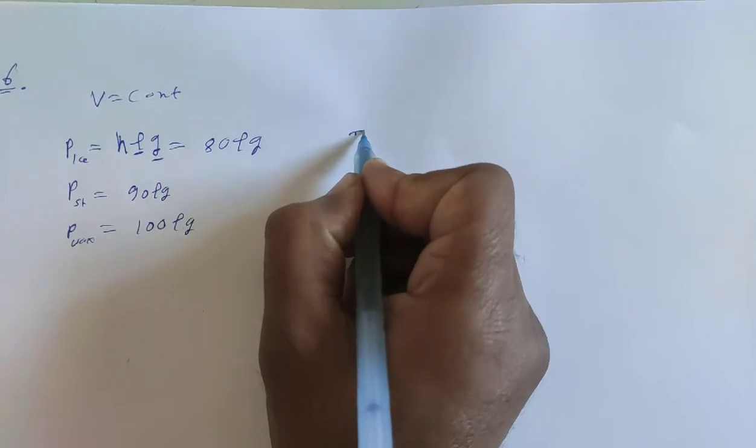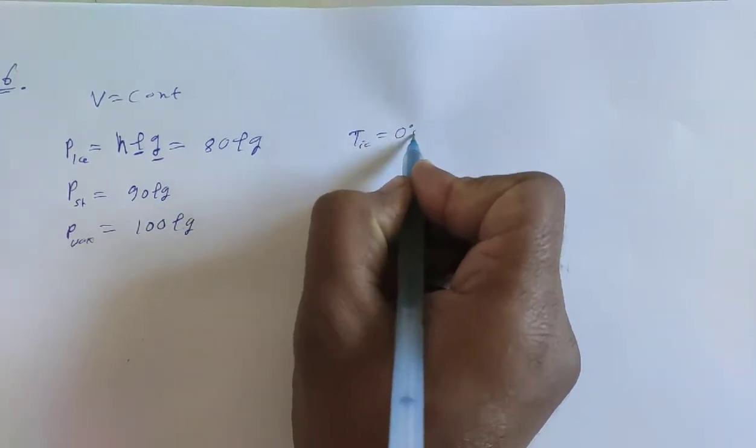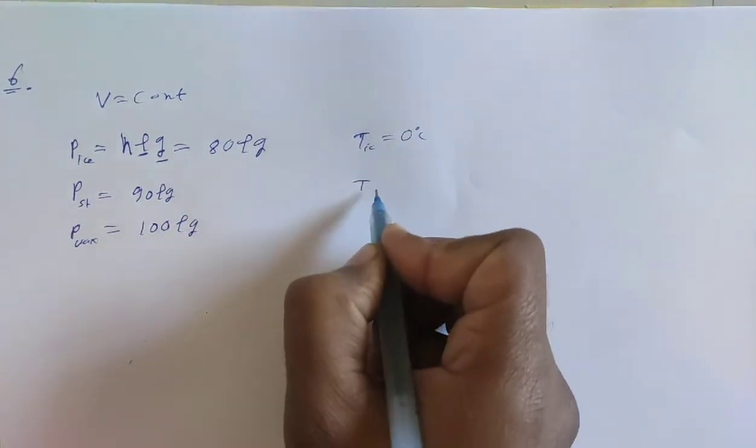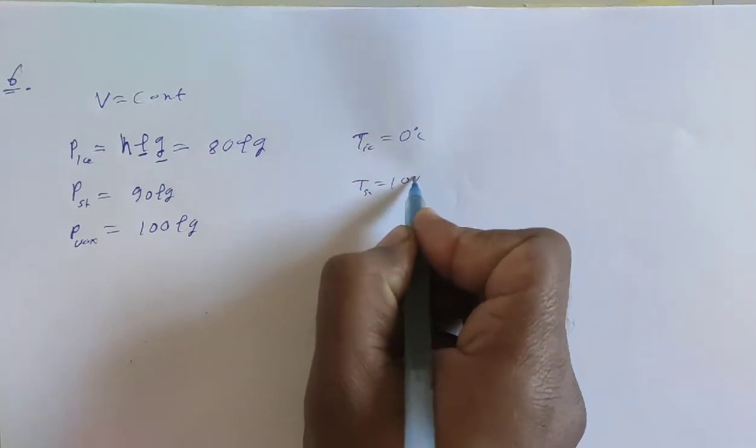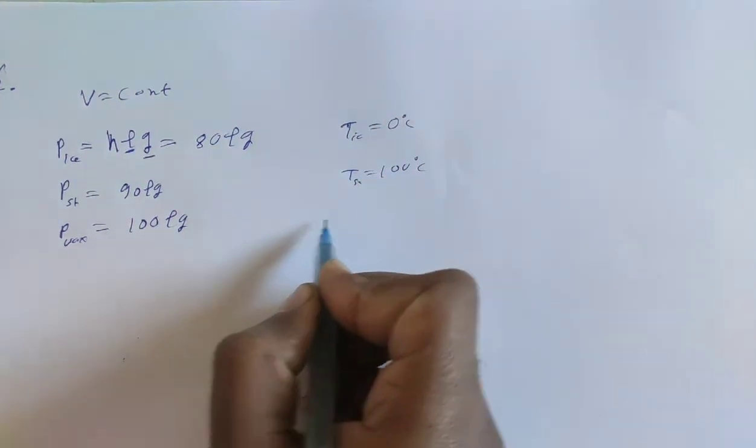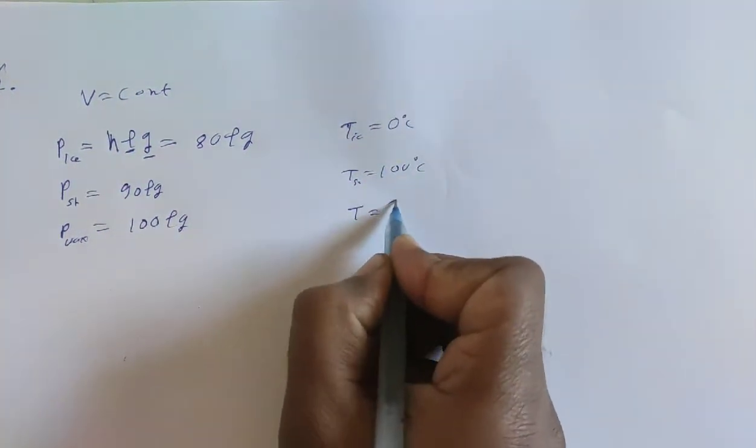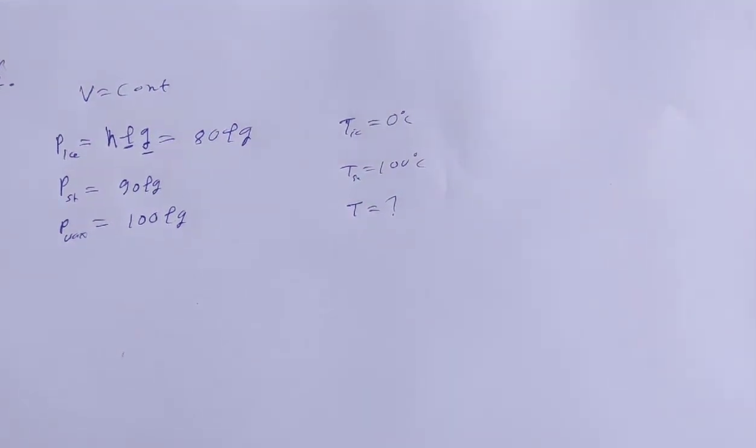Now if we note the temperatures: ice temperature in Celsius is 0 degree Celsius, steam temperature is 100 degree Celsius. The wax temperature for the heated wax is what we need to find—this is the question.